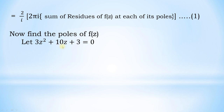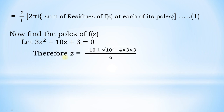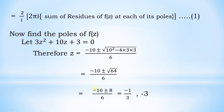To find the poles of f(z), set the denominator equal to zero: 3z² + 10z + 3 = 0. Using the quadratic formula with a = 3, b = 10, c = 3: z = (−10 ± √(100 − 36)) / 6 = (−10 ± 8) / 6. This gives z = −1/3 and z = −3.